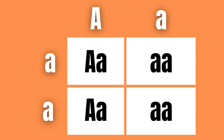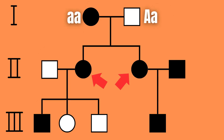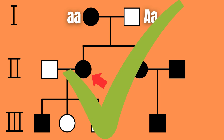Then we see that the chance that these parents will have children with either recessive traits or heterozygous dominant traits are 50-50. Therefore, this could very well be the case.